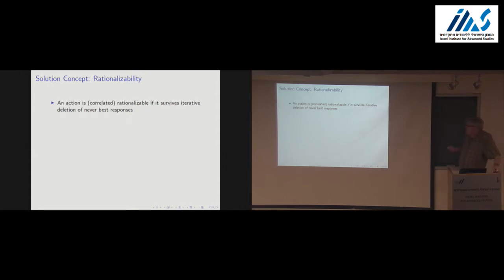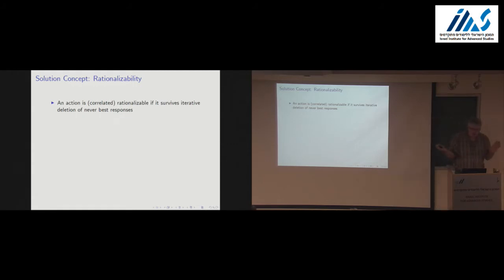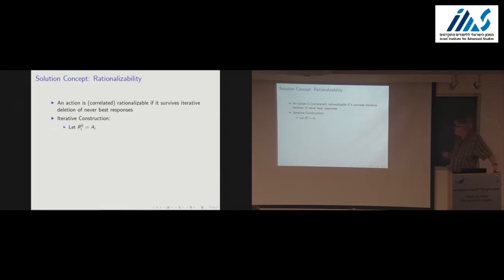Here's another classical solution concept: rationalizability. The version I'm going to talk about is looking at behavior where, if you're playing a game and we iteratively delete actions that are never best responses, what do you get at the end? I put here 'correlated rationalizability' because when I say iteratively delete actions which are never best responses, I allow you to have a conjecture about the action profiles of other players that are correlated. The original definition of rationalizability by Bernheim and Pearce did not allow them to be correlated — throughout this talk I'll always use correlated rationalizability.